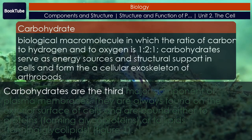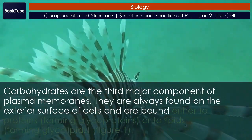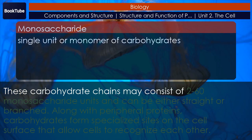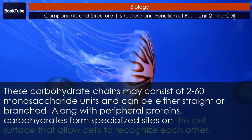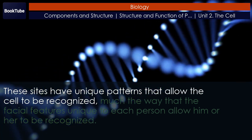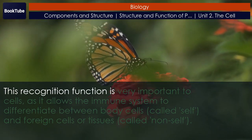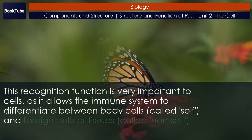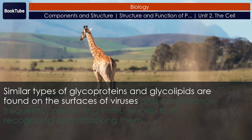The body recognizes its own proteins and attacks foreign proteins associated with invasive pathogens. Carbohydrates are the third major component of plasma membranes. They are always found on the exterior surface of cells and are bound either to proteins, forming glycoproteins, or to lipids, forming glycolipids. These carbohydrate chains may consist of 2 to 60 monosaccharide units and can be either straight or branched. Along with peripheral proteins, carbohydrates form specialized sites on the cell surface that allow cells to recognize each other, much like facial features allow a person to be recognized. This recognition function allows the immune system to differentiate between body cells—called self—and foreign cells or tissues, called non-self.